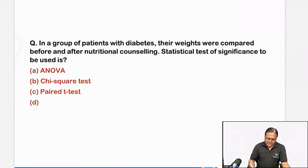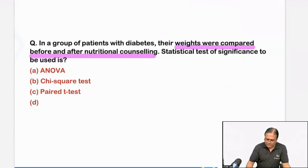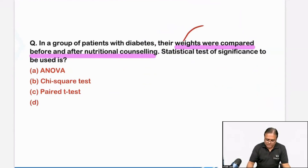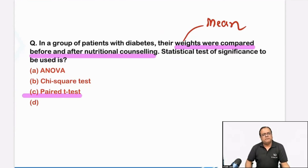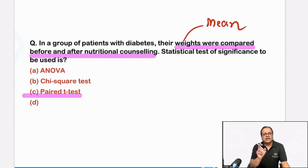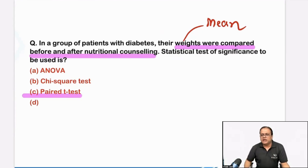In a group of patients with diabetes, their weights were compared before and after. When we look at a quantitative variable like weight, we are looking at metric data — best measure of central tendency is mean. So you are comparing mean before and after an intervention — this is paired student t-test. If they tell you diabetes in males versus diabetes in females and compare their weights, then it will become unpaired student t-test. If they compare proportion of diabetics before versus after intervention, that is chi-square. If they compare proportion of diabetes in males versus females, that will also become chi-square test.